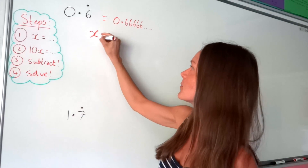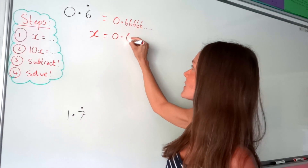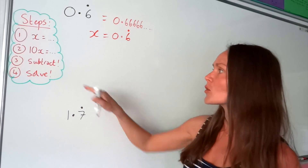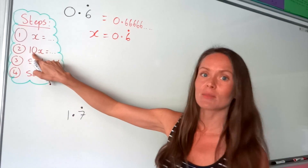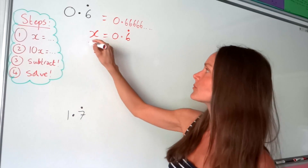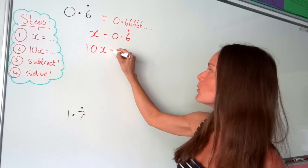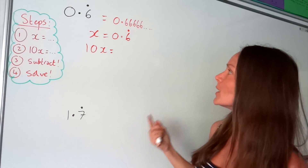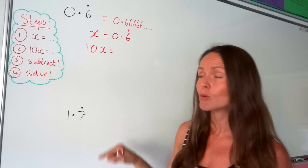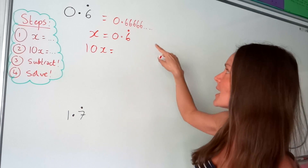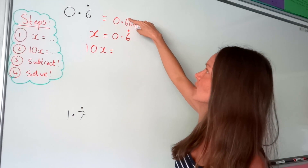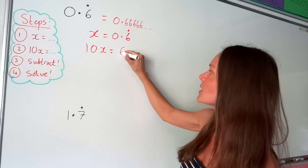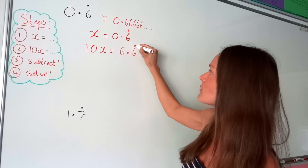The next step is to calculate what 10x is. I'm multiplying x by 10, which means I have to multiply this number by 10 as well. When you multiply by 10, the decimal moves one place to the right, so we're going to end up getting 6.6666, which is the same as 6.6 recurring.